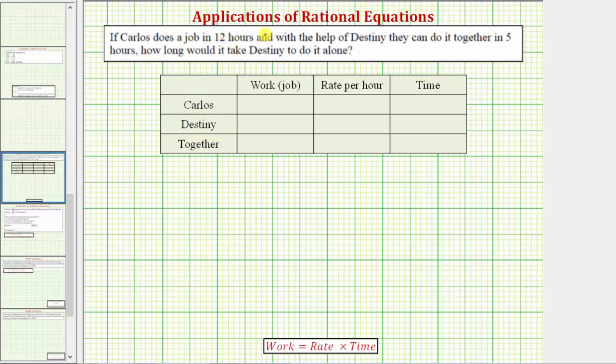So we know Carlos can do a job in 12 hours, which means he can complete one full job in a time of 12 hours, which means his rate is going to be one-twelfth of the job per hour. So we'll put one-twelfth here. Again if it takes him 12 hours to complete one full job, his rate would be one-twelfth of the job per hour.